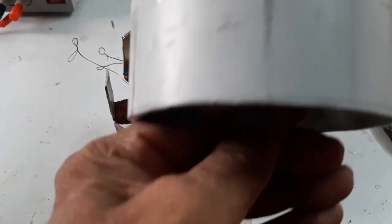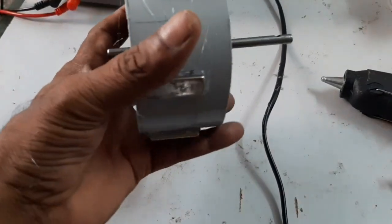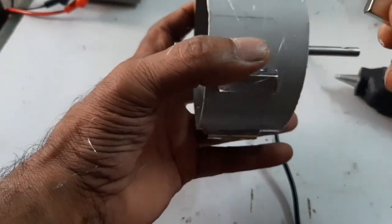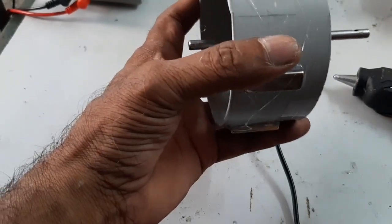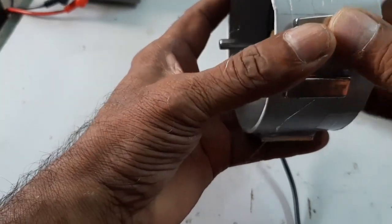Now I am going to attach the neodymium magnets. The magnets are attached to the rotor. The 12-pole rotor is now. I am going to prepare.